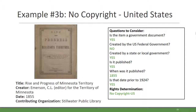Here is a second example of 'No Copyright — United States': a government document called The Rise and Progress of Minnesota Territory, edited by C.L. Emerson for the Territory of Minnesota in 1855, from the Stillwater Public Library. Was it created by the U.S. federal government? No. By a state or local government? Yes — the territorial government is equivalent to state government. Is it published? Yes, in 1855. Is that date prior to 1924? It is. Our rights determination is that this document has no copyright in the United States.